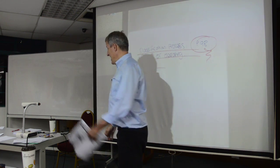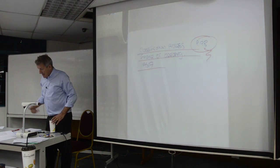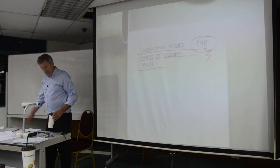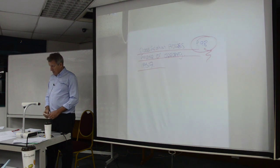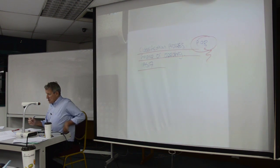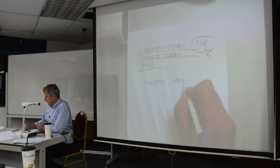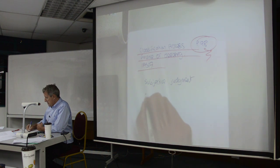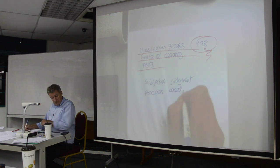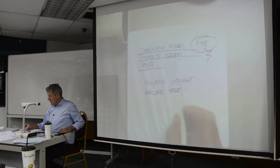The key takeaway from that list — the major, obvious ones are to do with the economic life, the title, the bargain option. The key takeaway is that it's a matter of judgment, a subjective judgment. The classification is principles-based.